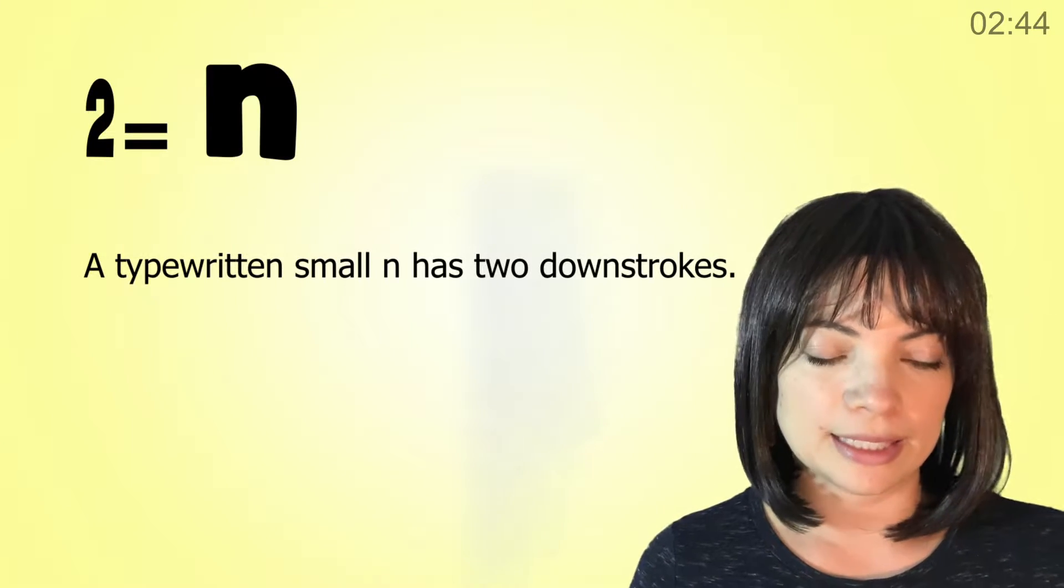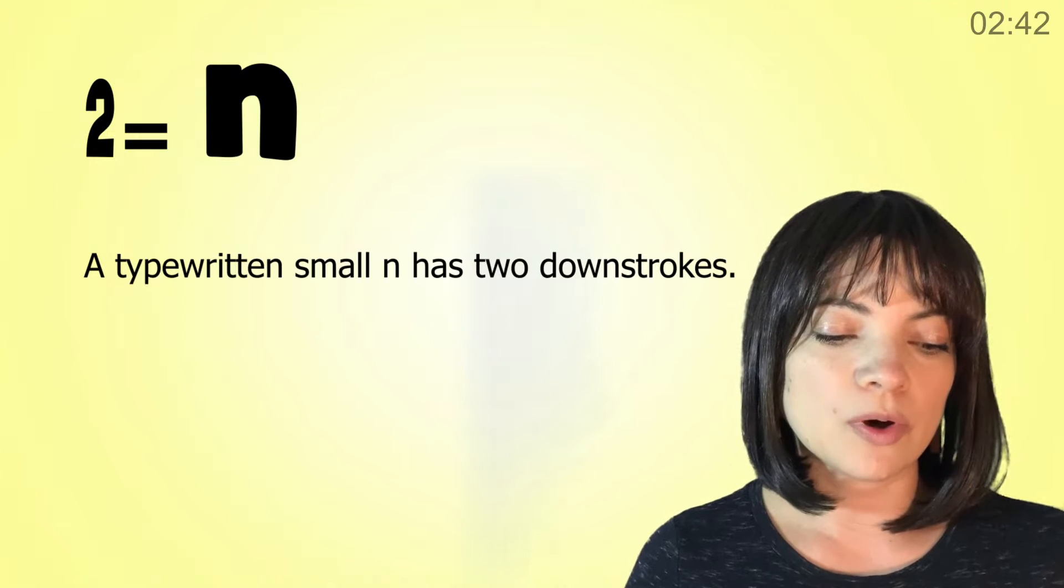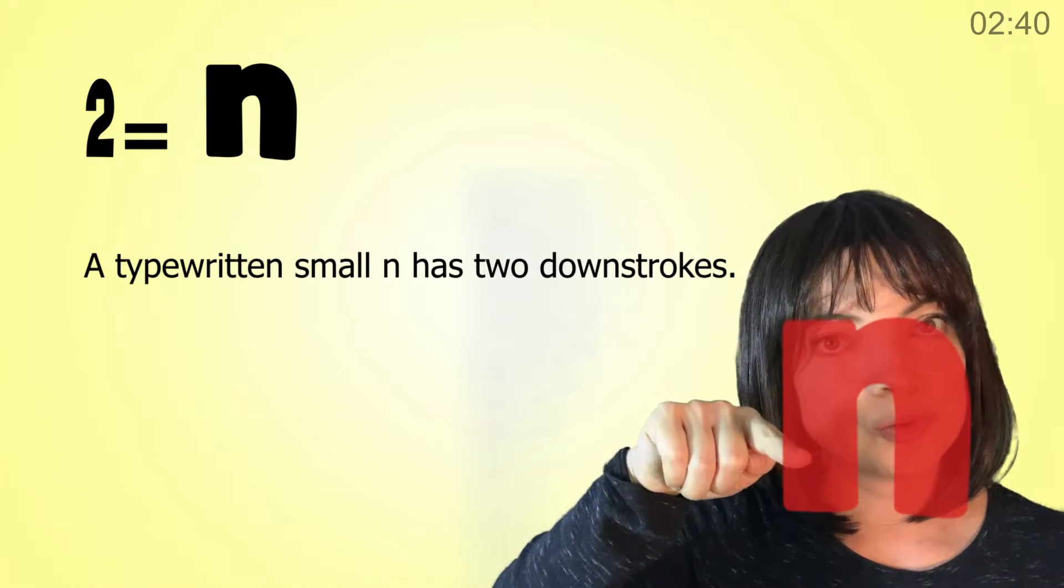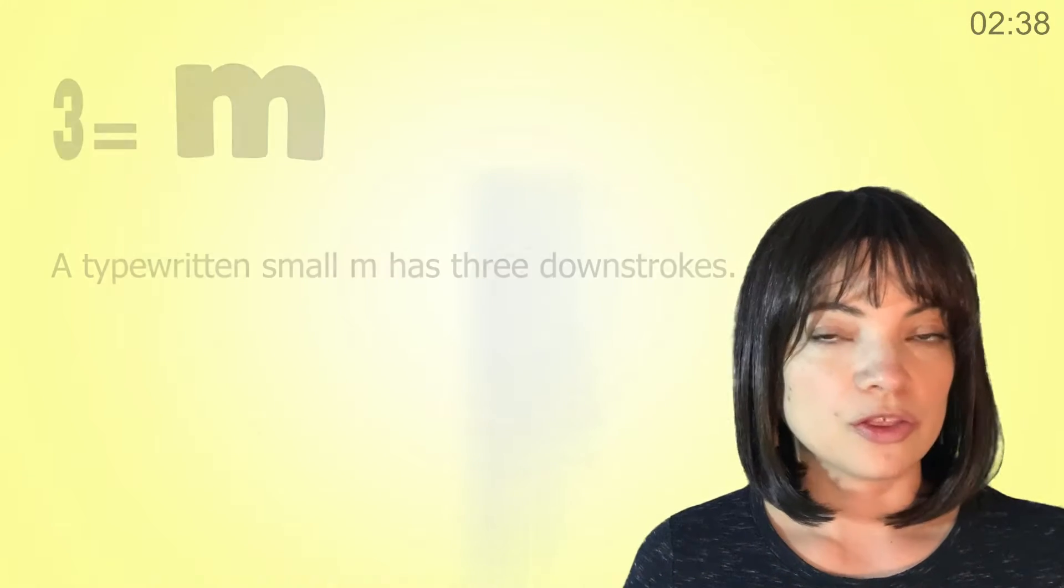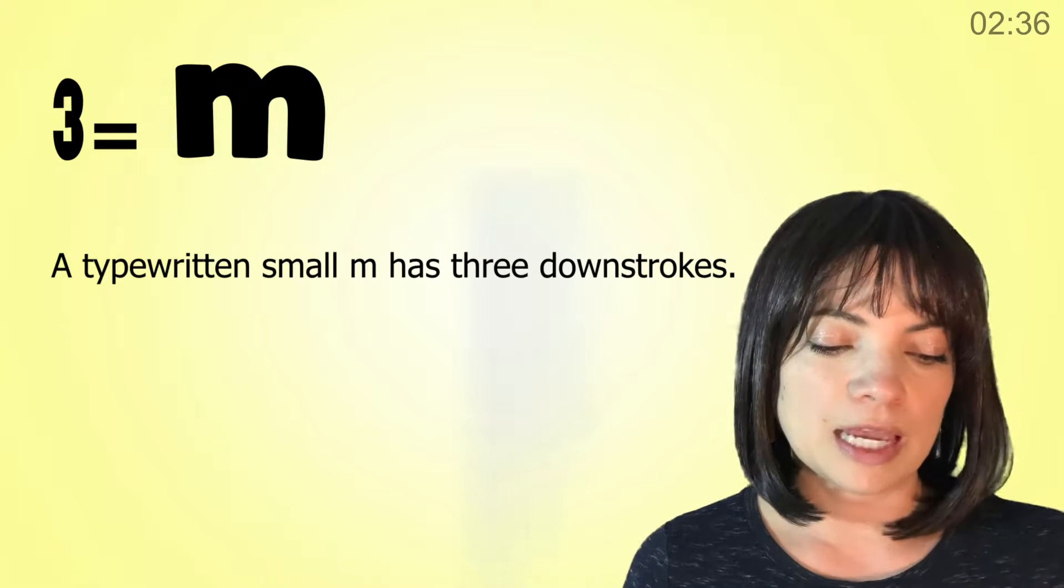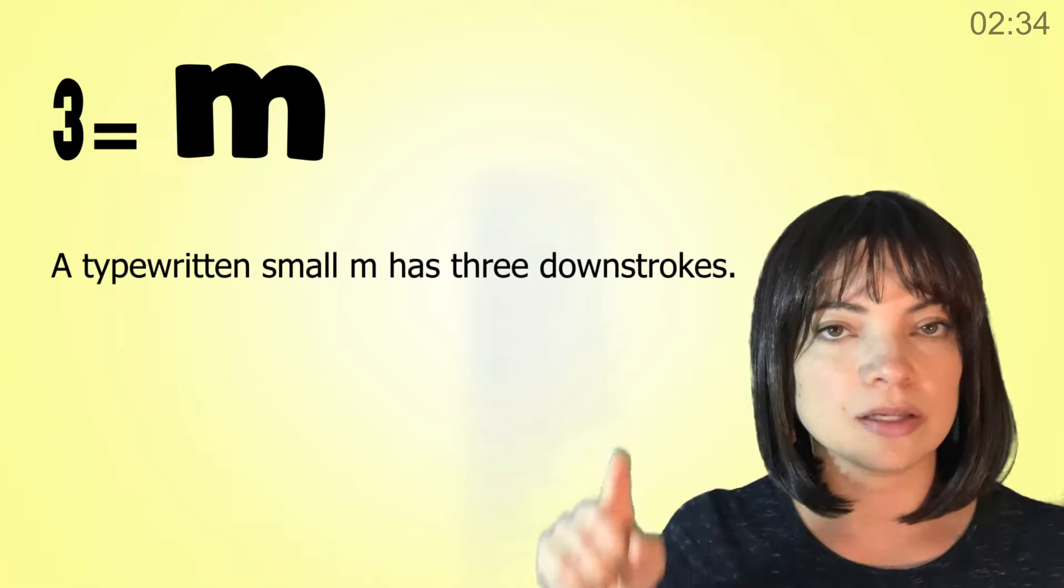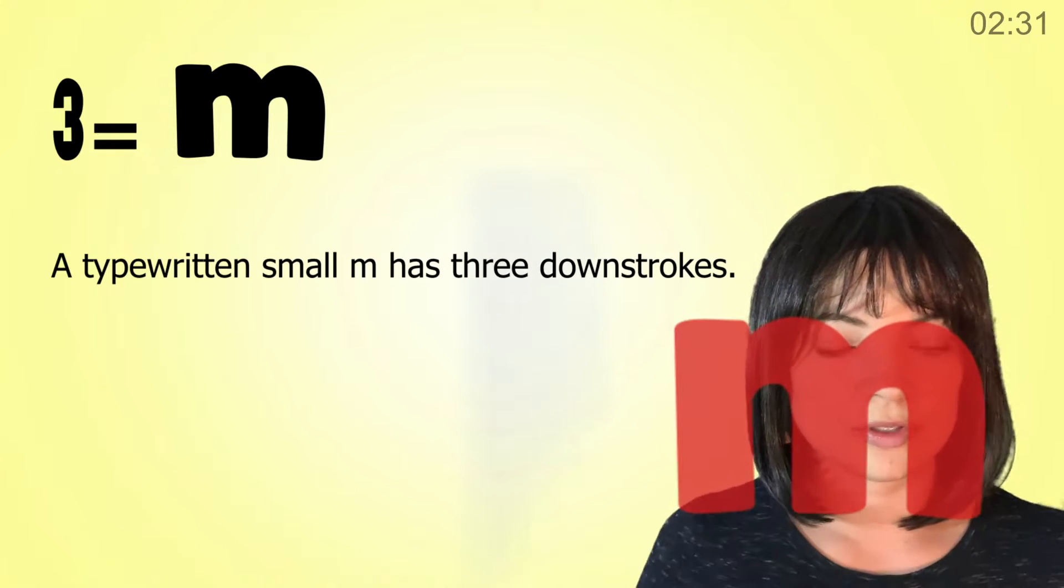Two is n. A typewritten small n has two downstrokes. Three is m. A typewritten small m has three downstrokes.